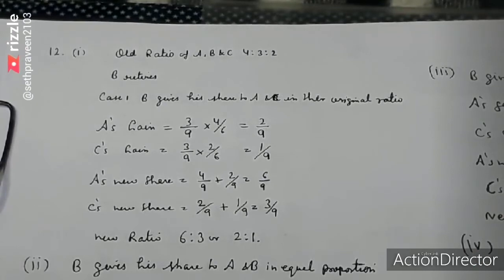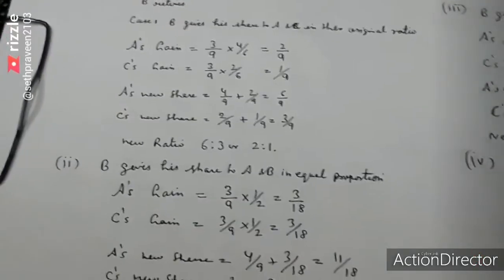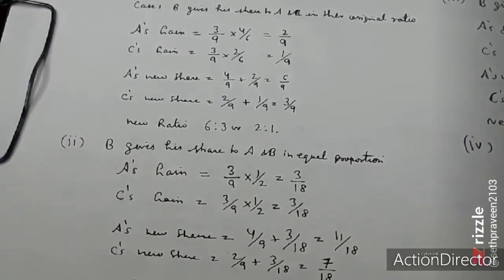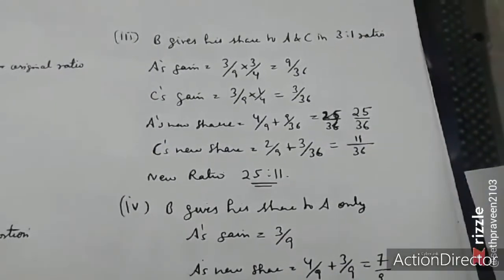2 by 9 goes to A and 1 by 9 to C. He has gained in the first share, and the gaining ratio is 2 to 1. Then, his share is equal to both, 3 by 9 equals 3 by 18. So 3 by 18 is equal to both, and the share ratio is 11 is to 7. Let's talk about part C in the next video.